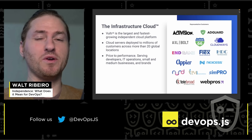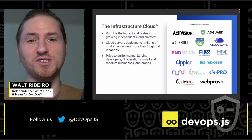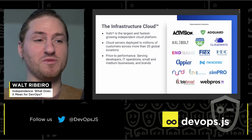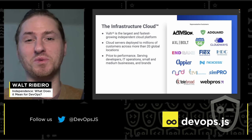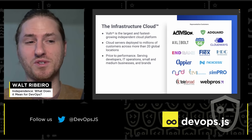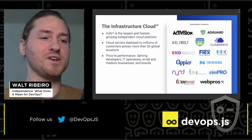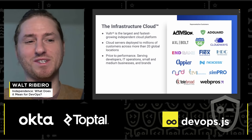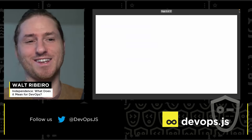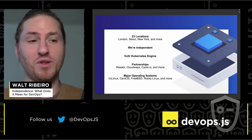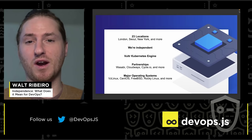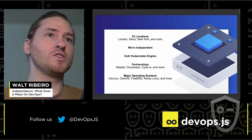Vulture is the infrastructure cloud. We are the largest and the fastest growing independent cloud platform. Our cloud servers have been deployed to millions of customers all across the globe, to over 20 locations. We have an awesome price-to-performance ratio and we serve developers, IT ops, small and medium businesses, and many brands.